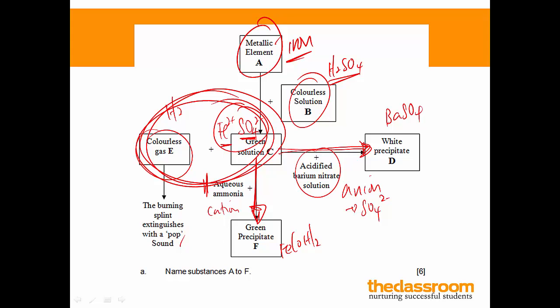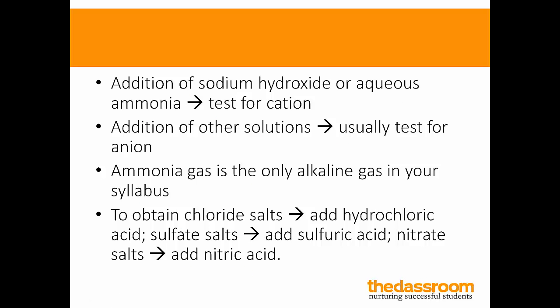So, I hope these three questions have helped you to identify your weaknesses and how to move forward to score as many marks as you can in your exam. Just to wrap up, I'd like to end off with four points. Now, when you add sodium hydroxide or aqueous ammonia, you're always testing for a cation. If you add any other thing, usually you're testing for the anion.